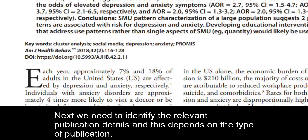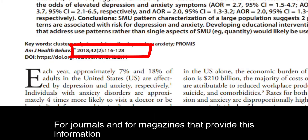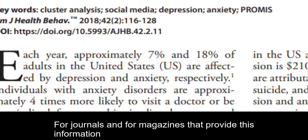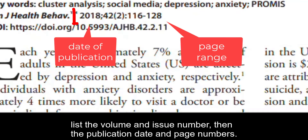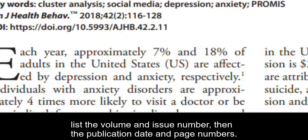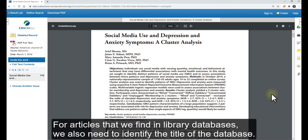We need to identify the relevant publication details, and this depends on the type of publication. For journals and magazines that provide this information, list the volume and issue number, then the publication date and page numbers. For articles found in library databases, we also need to identify the title of the database.